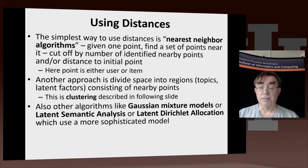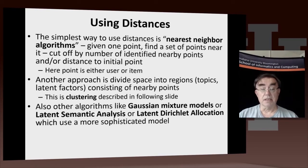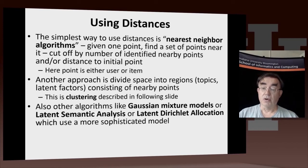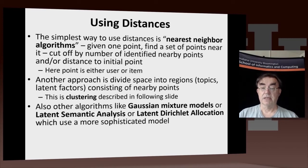Another important approach is to divide the space into regions. We're always thinking of spaces divided into regions — those regions are things like so-called latent factors or topics, and they're equivalent to the regions in spaces we're familiar with. The technologies used include clustering, Gaussian mixture models, latent semantic analysis, and latent Dirichlet allocation. All of these methods correspond to dividing space into regions.